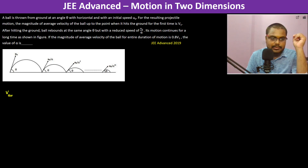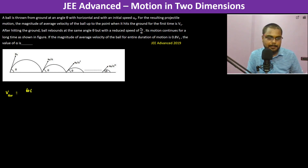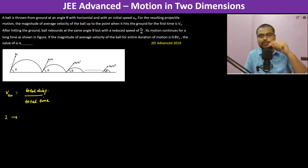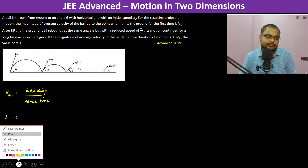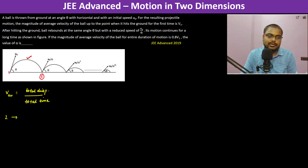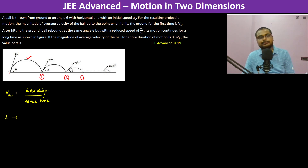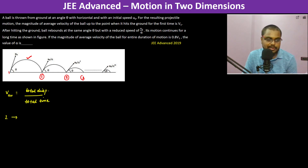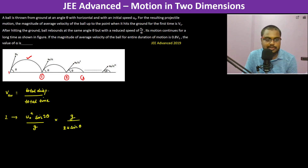Average velocity equals total displacement divided by total time. For the first flight, the range — which is the total displacement — is U₀² sin(2θ) divided by g. And the time taken is 2U₀ sinθ divided by g. So the average velocity for the first flight is this range divided by this time.